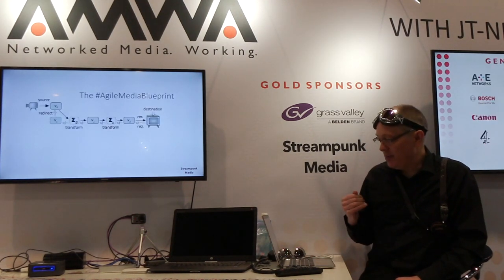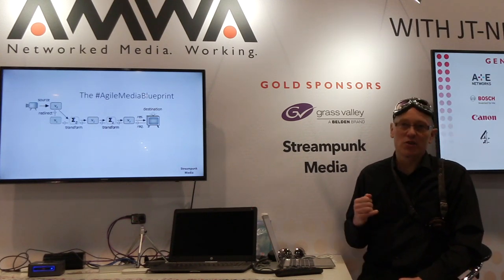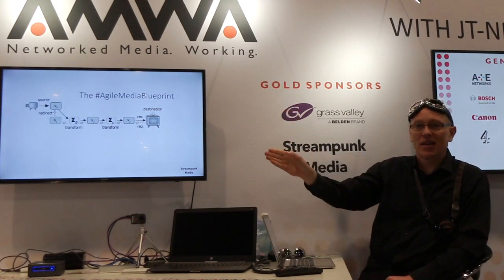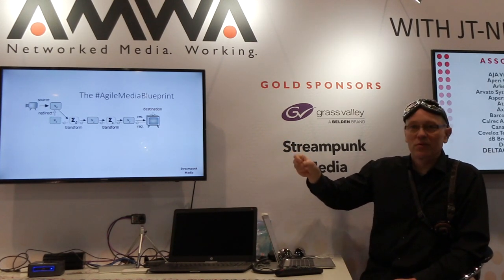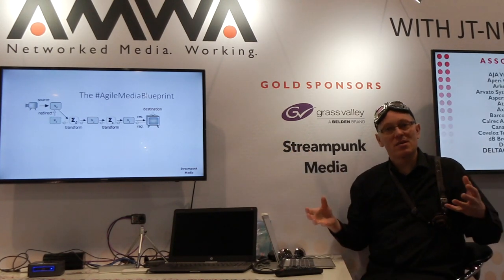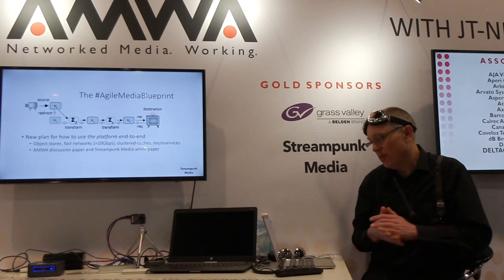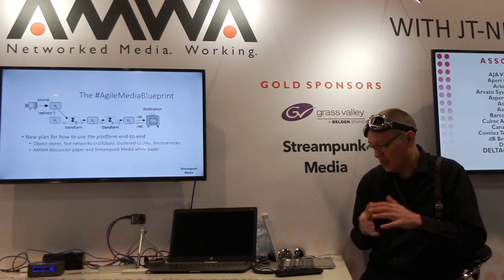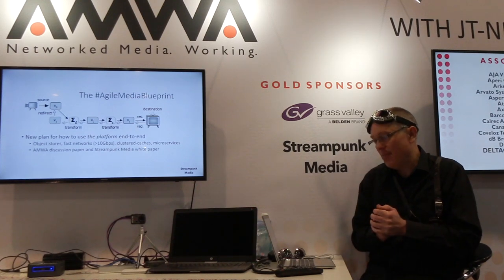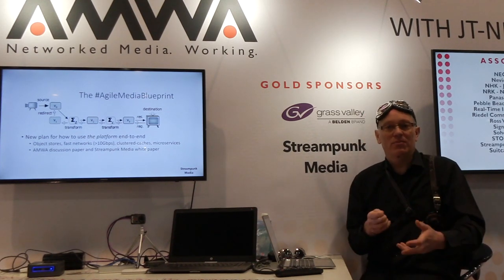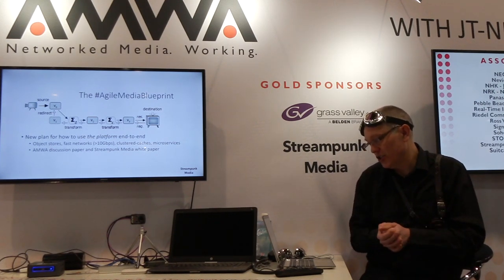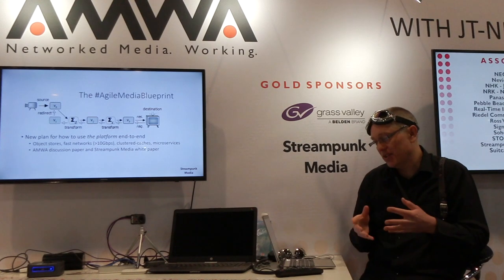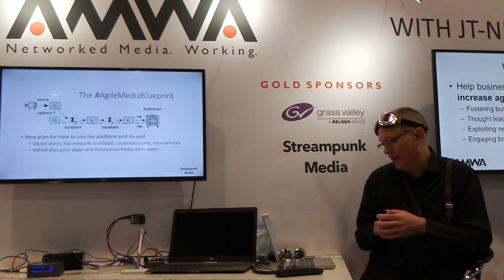So the Agile Media Blueprint is really about: we still want to make television by going from sources to destinations with processing functions in the middle. But how do we do the same thing using this massively concurrent infrastructure? It's a new plan and discussion point for how to use the platform of the internet — the same thing that Twitter used, the same thing that Google used — to make television, to make new kinds of media experience using object stores, fast networking, clustered caches and microservices.